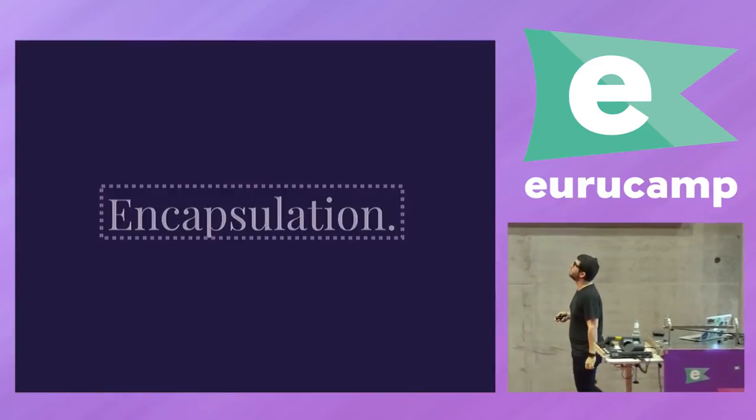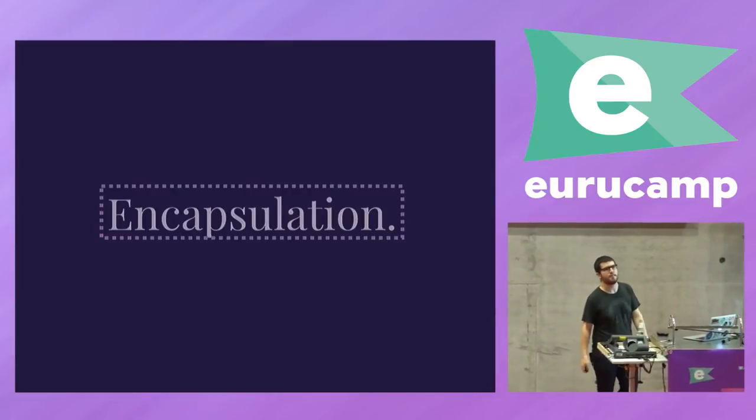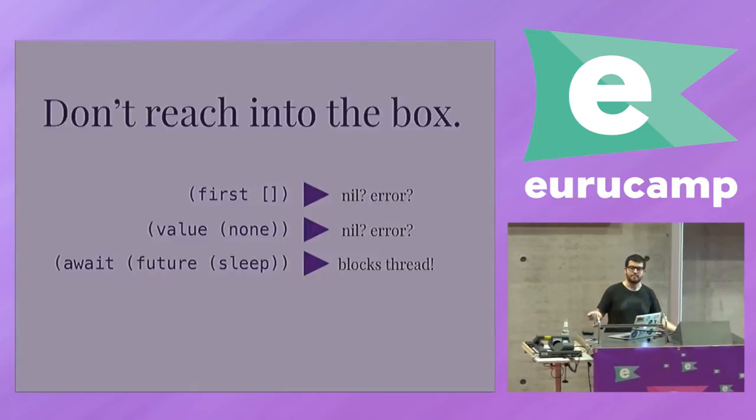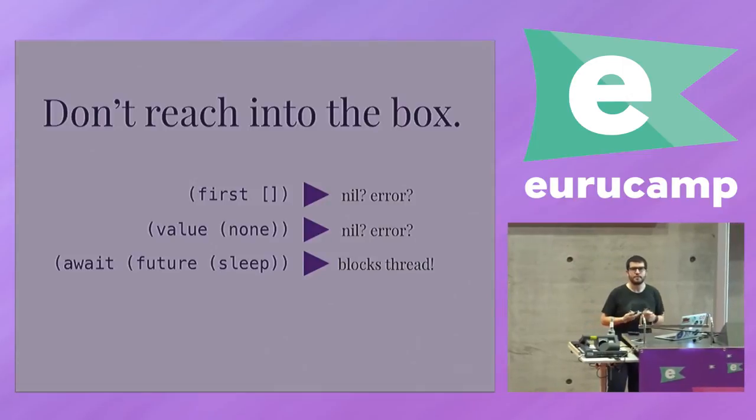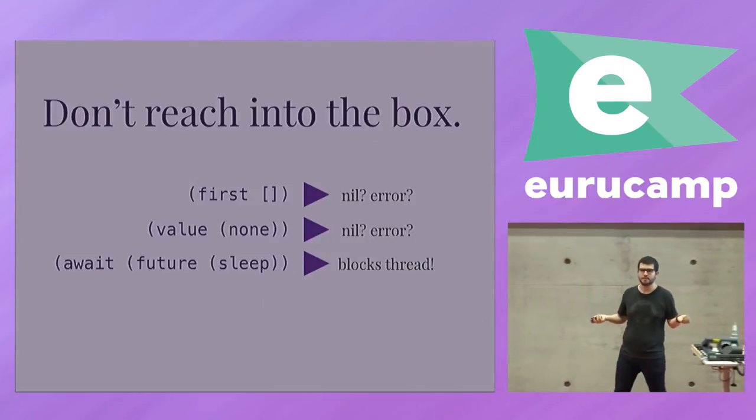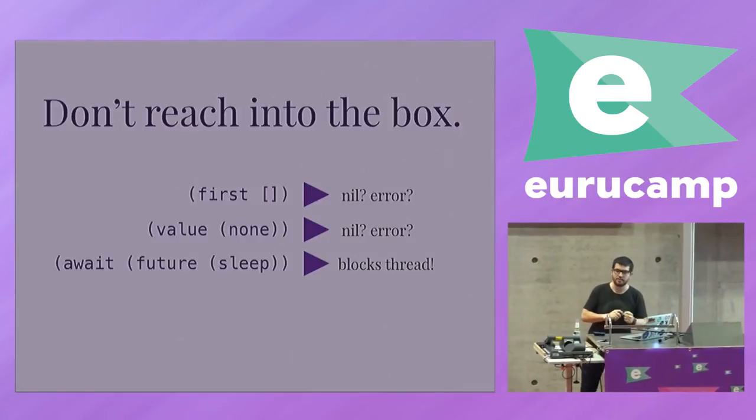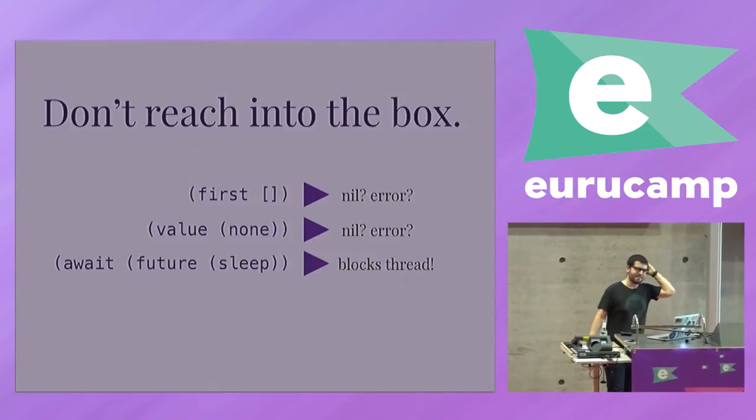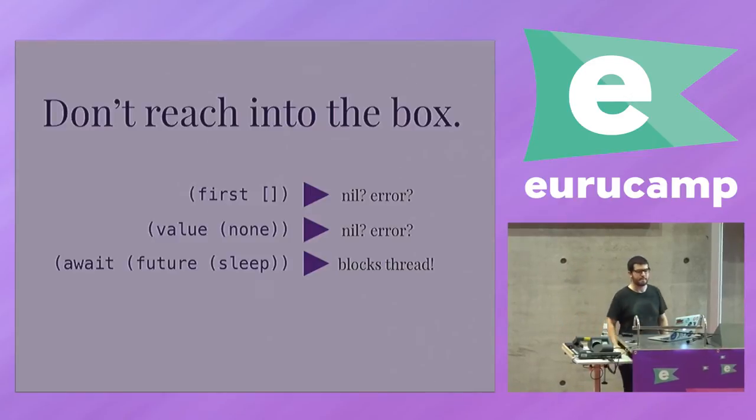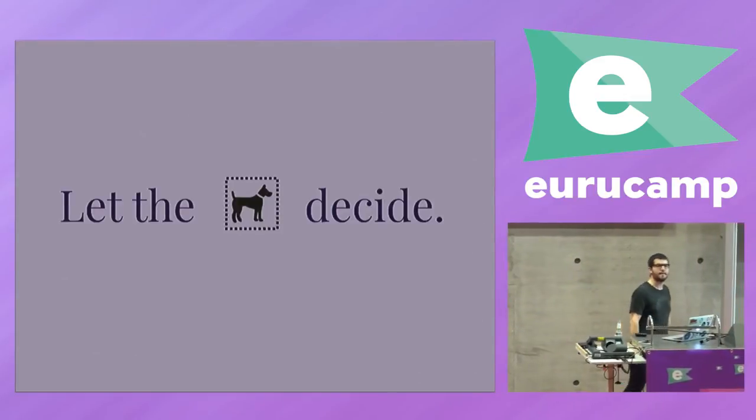You're probably thinking, that sounds an awful lot like encapsulation. I'm used to that. It's like an object. You just tell it something, do this in whatever way you want, maybe. And, of course, it's not good to reach into objects. And it's not good to reach into boxes either. If you try and get the first element of a list and it's empty, what do you get? Nil? An error? Depends on your language. That's not a good thing. If you try to unwrap an optional and nothing is there, what do you get? Nil? Or an error? That's scary. You should be scared of nil. If you try to unwrap a future, basically you need to wait until it exists, right? That blocks the thread. That's not a good thing. So you're better off telling the box, look, do this whenever you want, in whichever way you want. Let the box decide.